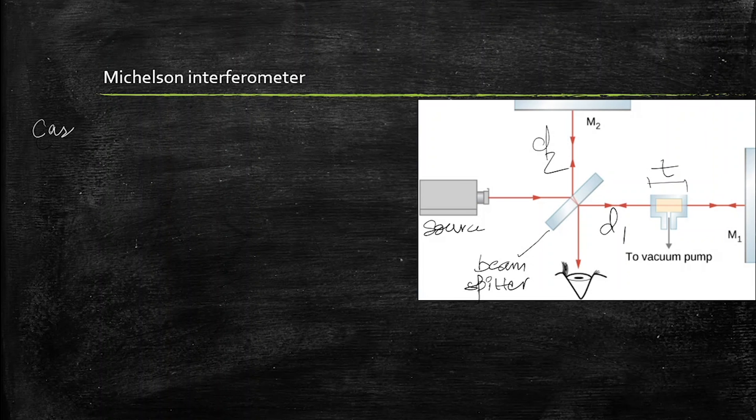Starting with case 1, in case 1 we have no gas tube in it between the path, so we have no gas tube. So the difference between, this is 2D1 minus 2D2, light is traversing twice, so it's twice D1 minus twice D2. It's a path difference between the two rays that should be equal to the integral multiple M into lambda.